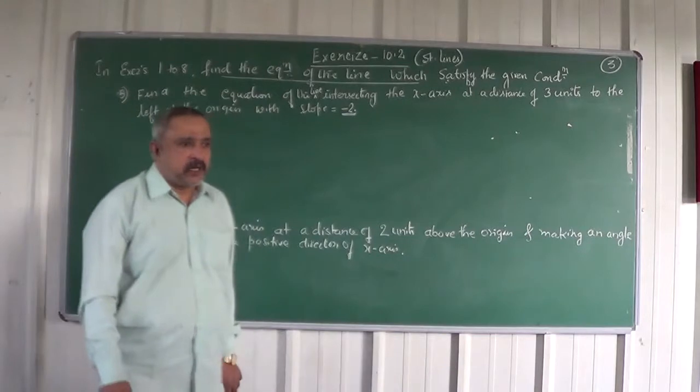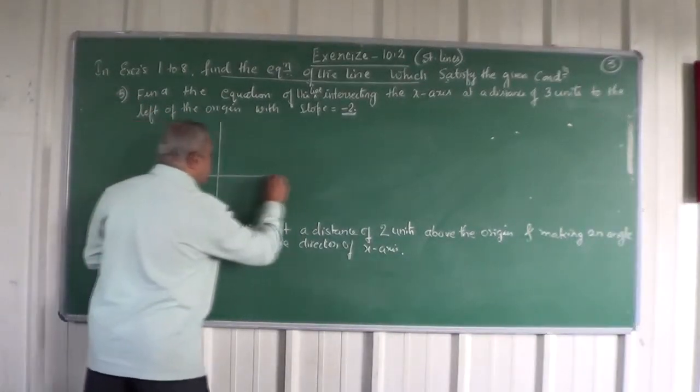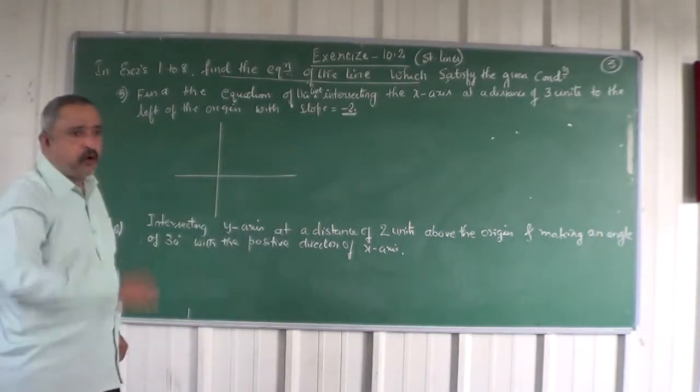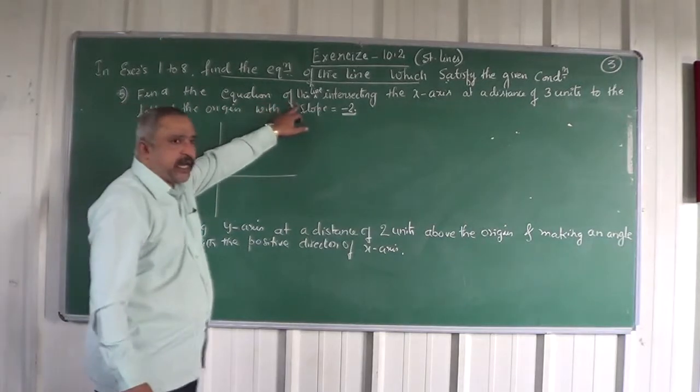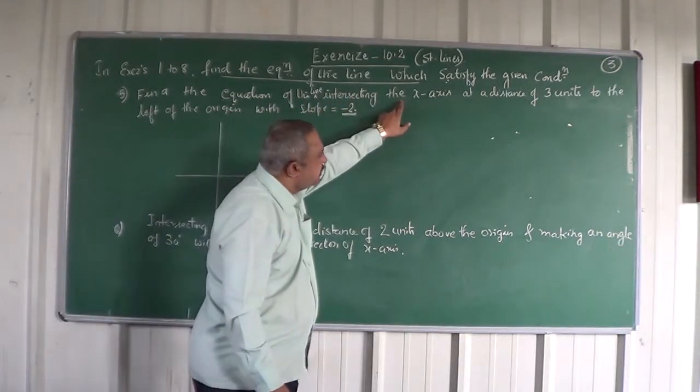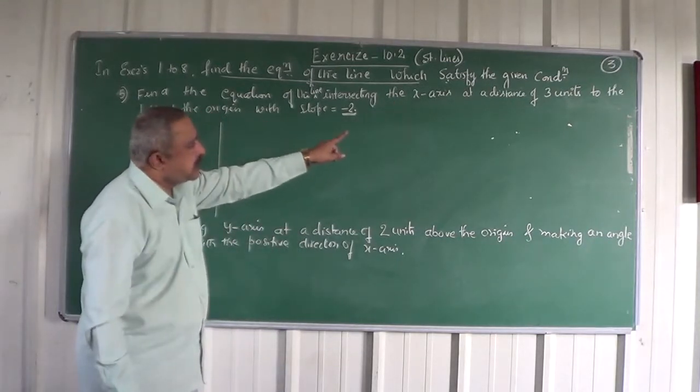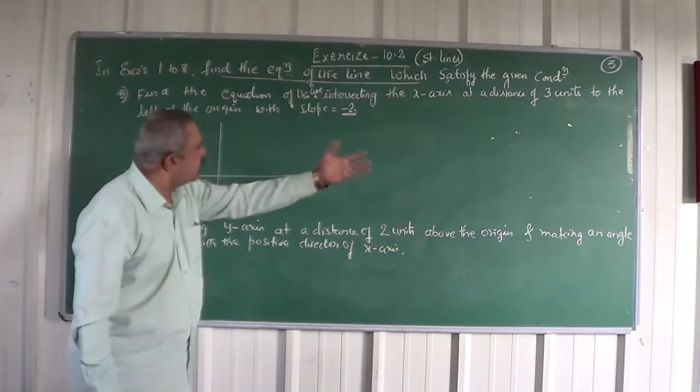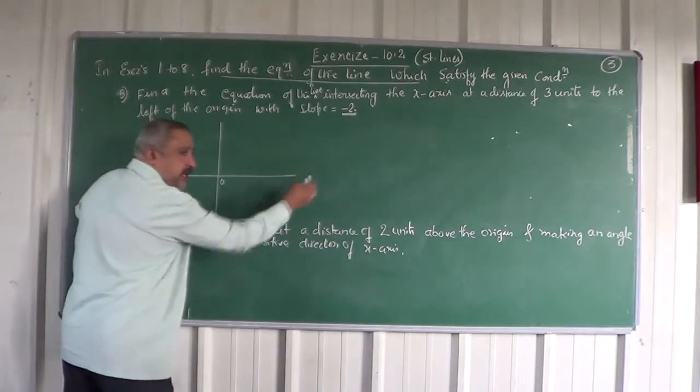Now, to understand what this is, let us put a diagram. In the coordinate system, there is a straight line which is intersecting the x-axis. This is x-axis and it intersects at a distance of 3 units to the left of the origin. You know this is origin, this is left, this is right.